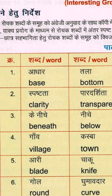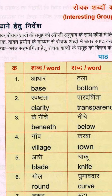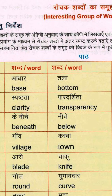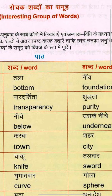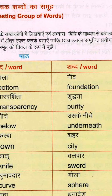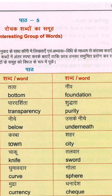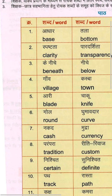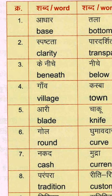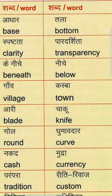Let's start with the first words. Aadhar, which in English is called Base — B-A-S-E. Next is Tala, meaning Bottom. Next is Neev, meaning Foundation — F-O-U-N-D-A-T-I-O-N.